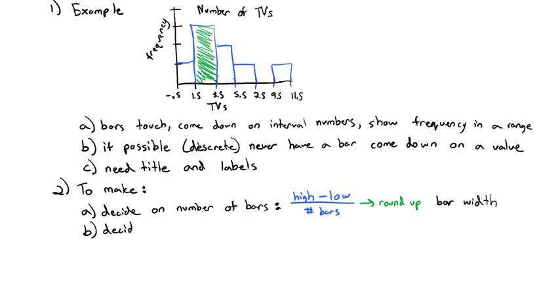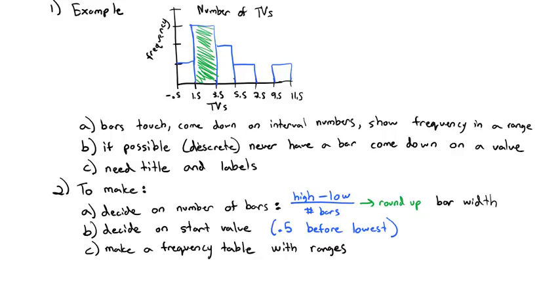Next, we need to decide on the starting value. What I usually recommend we do to decide on the starting value is do 0.5 before the lowest number. In my TVs example, 0 is the lowest number of TVs, so I went 0.5 before that, so I'm staggered and the bars won't come down on that. Then it's helpful to make a frequency table with ranges. With the ranges that we found in parts A and B here. And we can use that frequency table then to build the histogram.